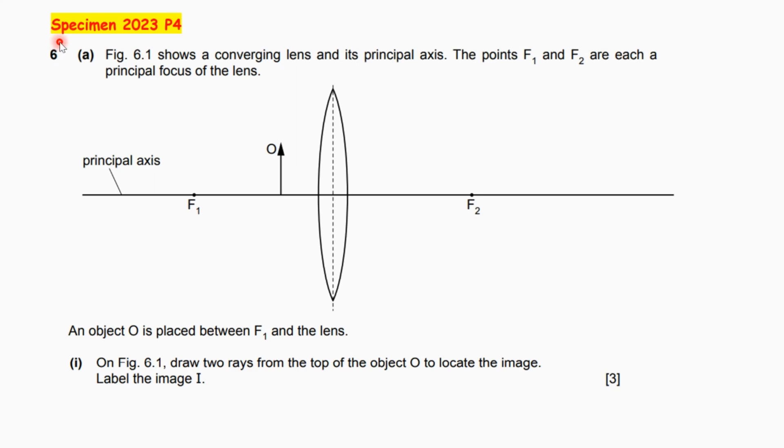Hi guys, welcome to physics series. Today we have a specimen 2023 paper 4, question 6, part a. Figure 6.1 shows a convergent lens and its principal axis. The points F1 and F2 are each a principal focus of the lens. An object O is placed between F1 and the lens.